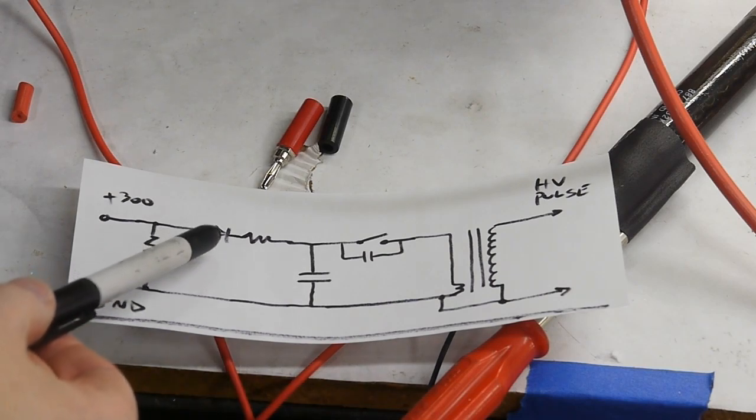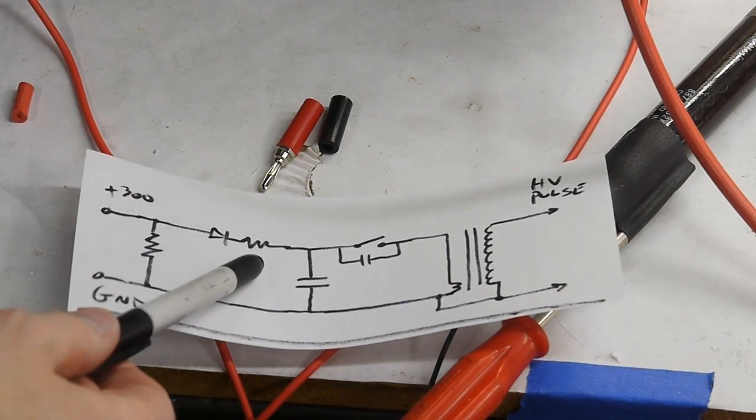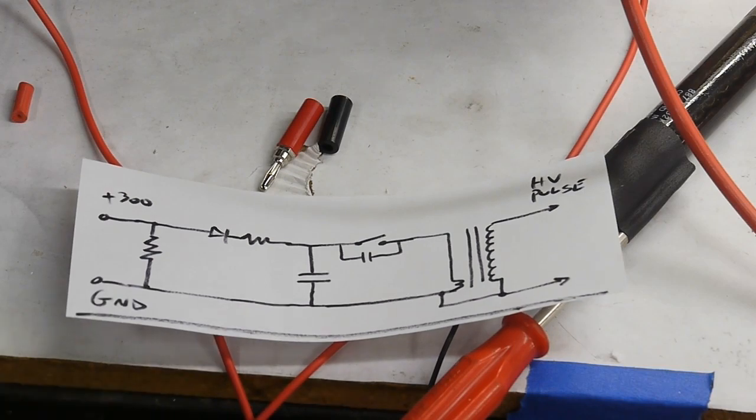Then I added this diode just to try to keep high voltage pulses from backing up into the supply and this resistor limits the charge rate of the main capacitor. I think this capacitor is about 300 microfarads at 350 volts.